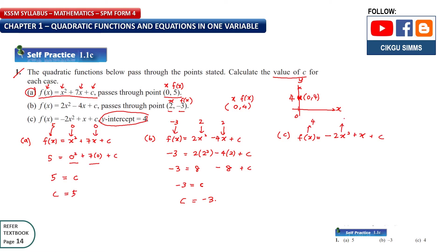Substituting x = 0 and f(x) = 4: 4 = -2(0²) + 0 + c. You need to show this substitution step. This simplifies to 4 = 0 + c, so c = 4.